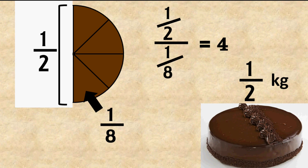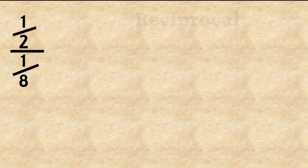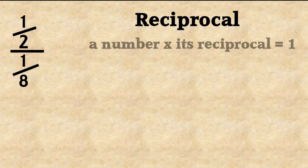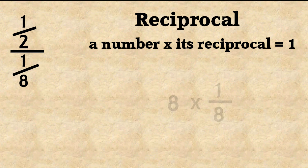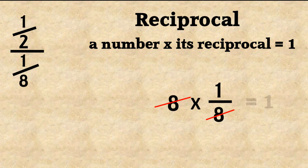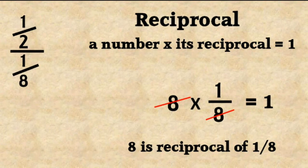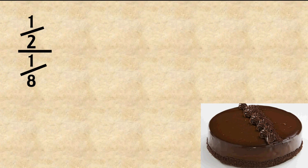Here we introduce the reciprocal — it is very important, so look carefully. If we multiply a number by its reciprocal, we get one. For example, one-eighth multiplied by eight equals one, so eight is the reciprocal of one-eighth.